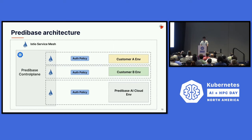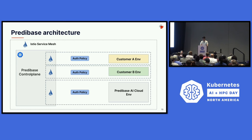Going a bit more into the privacy part, for those familiar with Istio — with Istio you are allowed to configure authorization policies. We have a centrally managed Istio control plane that allows us to manage everything locally, not in the customer data planes, so that we can restrict communication between customer deployments.